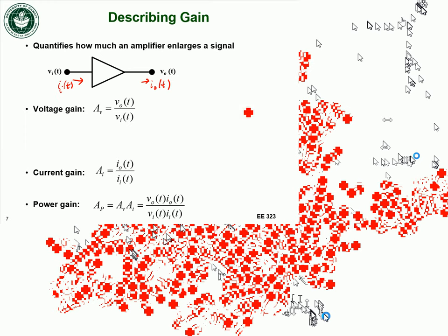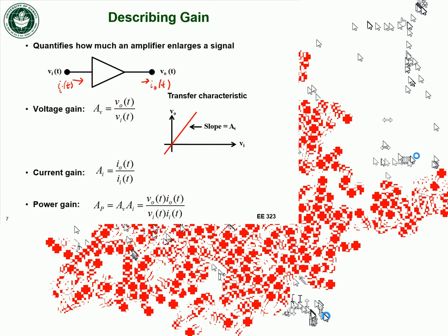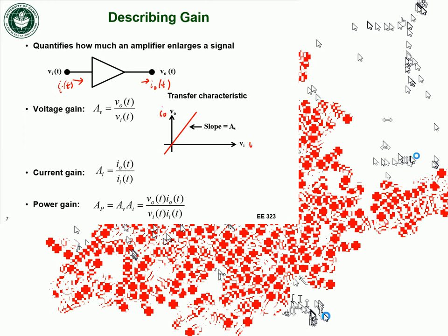For any amplifier, we can describe its voltage gain, current gain, and power gain, as long as we know the relationship between input and output. We can also graphically represent any one of these gains with the transfer characteristic — plotting output voltage as a function of input voltage. Since these are linear amplifiers, it should be a line, and the slope of that line equals the voltage gain. If I plot current instead, the slope of the line would be the current gain.